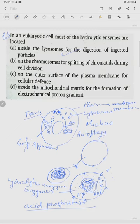Now, the option of the question is A, statement is correct. Statement B, hydrolytic enzyme present on the chromosome for splitting of chromatids during cell division, this statement is wrong. On the outer surface of plasma membrane for cellular defense, such statement is also wrong. Inside the mitochondrial matrix for the formation of electrochemical proton gradient, such statement is also wrong.